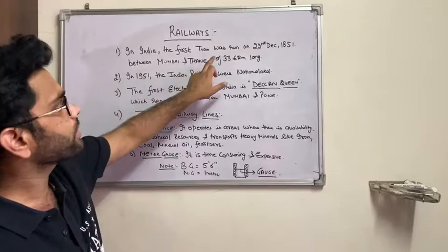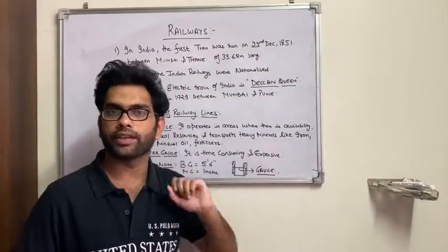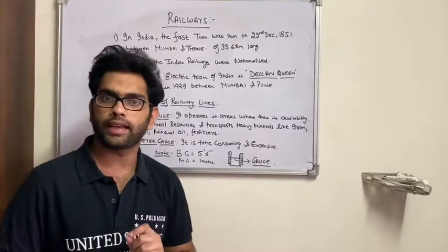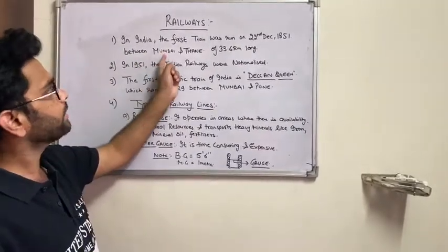In India, the first train was run on 22nd December 1851. 22nd December 1851, the first train was run from Mumbai.